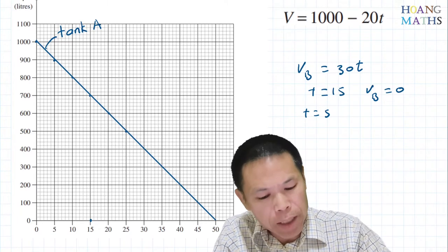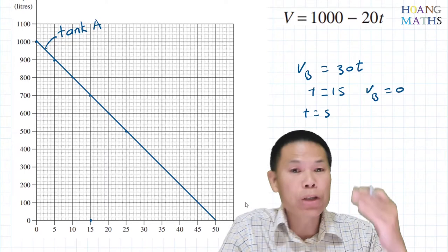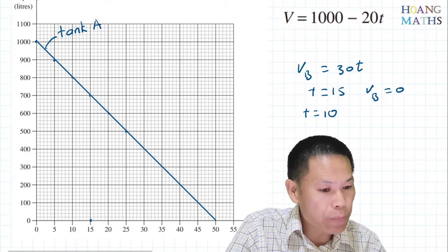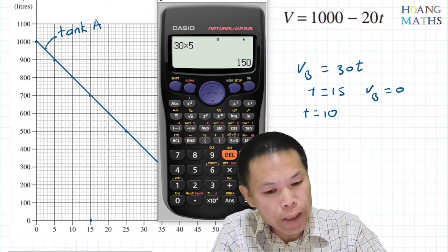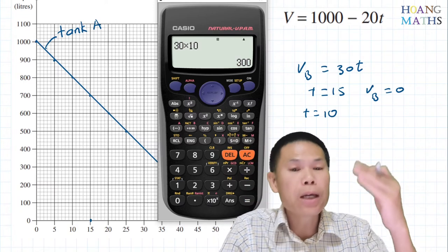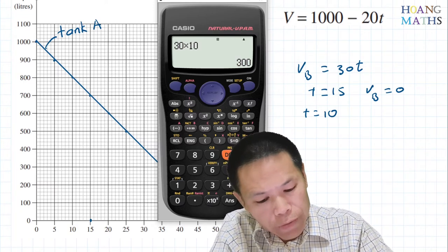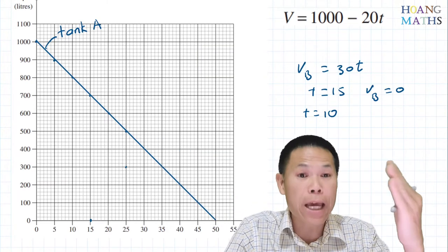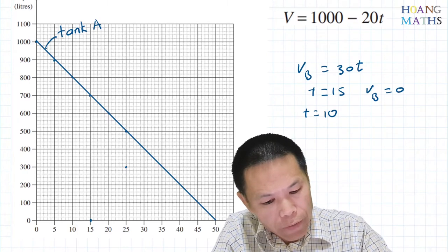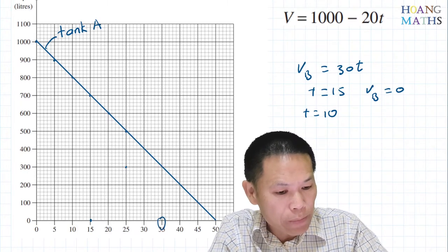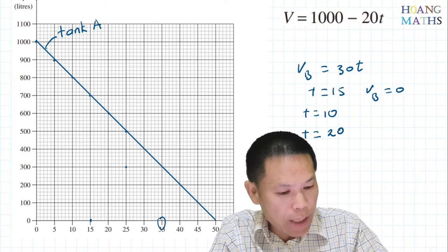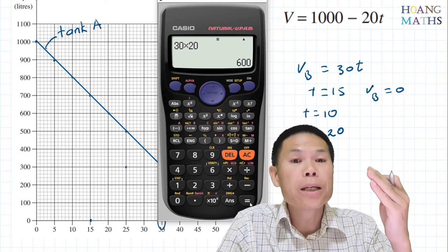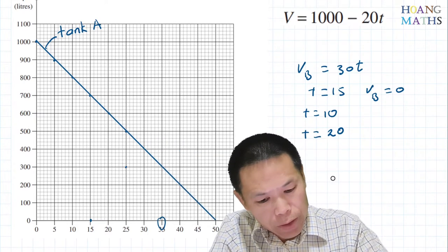Ten minutes after t = 15 is t = 25. Substituting t = 10 into 30t gives 300, so at t = 25, V = 300. Another 10 minutes later is t = 35. At t = 35, that's 20 minutes after the start, so 30 × 20 = 600. So at t = 35, V = 600.